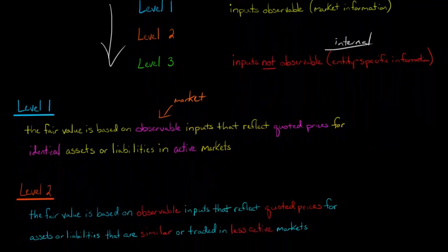Now, level two is also based on observable inputs that may be based on quoted prices or something. But here's the thing, it could be based on an asset or a liability that is similar, not necessarily identical, or it could be a situation where it's a less active market. So it's still based on observable inputs. This isn't just the manager did this analysis and that's what they think. There are observable market information that we can use. And let me give you an example.